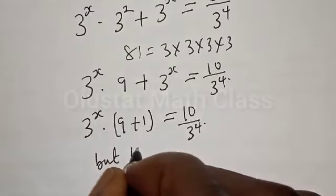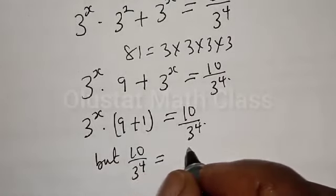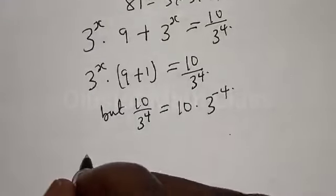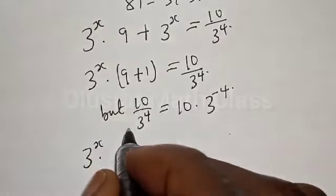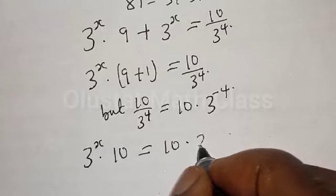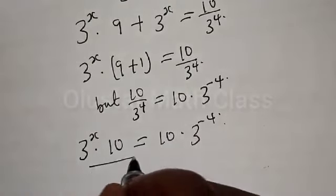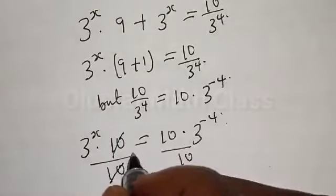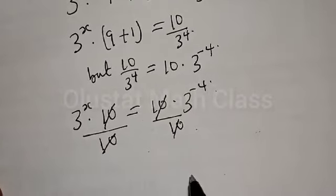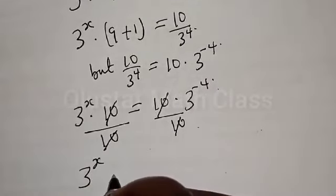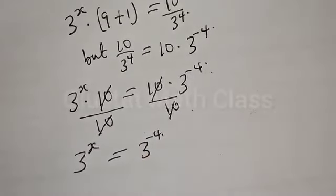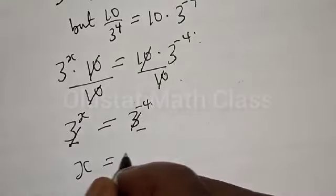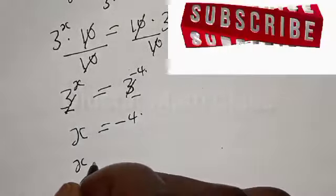10 divided by 3 to the power 4 is the same as 10 multiplied by 3 to the power minus 4. Therefore our equation becomes: 3 to the power x multiplied by 10 equals 10 multiplied by 3 to the power minus 4. Now divide both sides by 10 — the 10s cancel — and our equation becomes 3 to the power x equals 3 to the power minus 4. Since they have the same base, x is equal to minus 4. Our final answer is x equals minus 4.